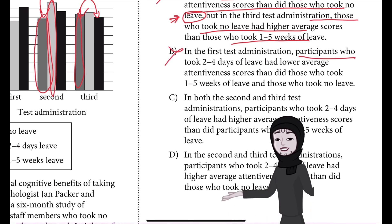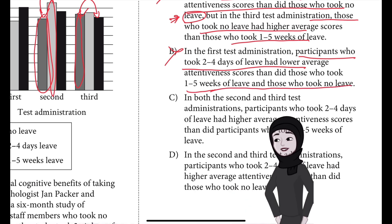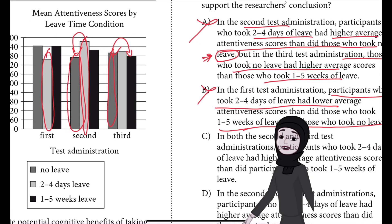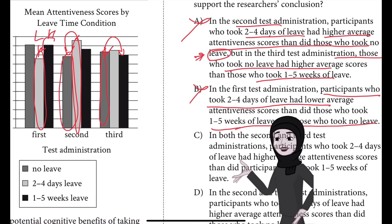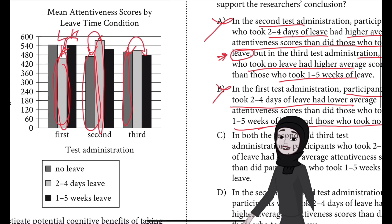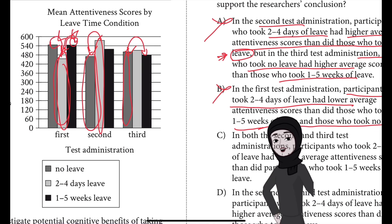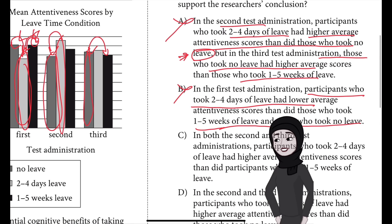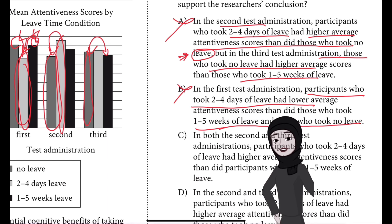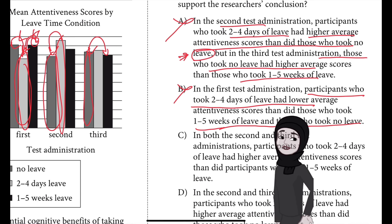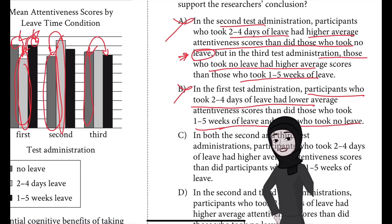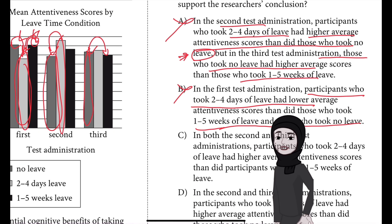Choice B is talking about participants who took two to four days of leave and those who took no leave in the first test administration. Looking at the graph, those who took two to four days of leave had lower attentiveness scores than both those who took one to five weeks of leave and those who took no leave. Choice B is incorrect because, although the graph does show this, this test administration occurred before any participants went on leave, so these results have no bearing on the researchers' conclusion about how the amount of leave taken affected cognitive functioning.